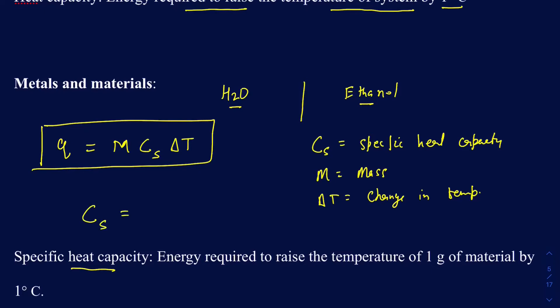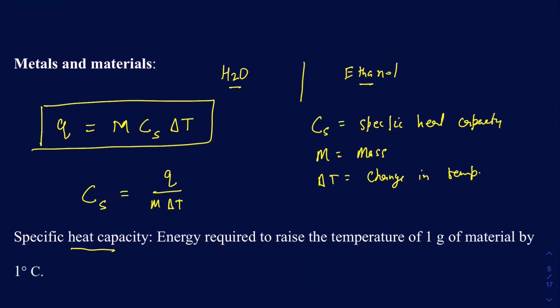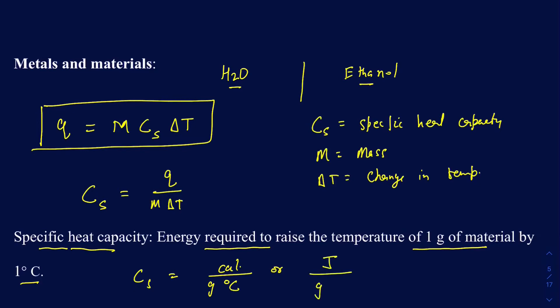Make sure you have the equation memorized, and you can rearrange it to find specific heat capacity: Cs equals Q over M times delta T. The definition of specific heat capacity is the energy required to raise the temperature of one gram of material by one degree Celsius. The units are calories per gram degree Celsius, or joules per gram degree Celsius.